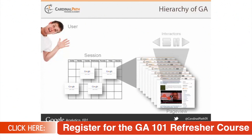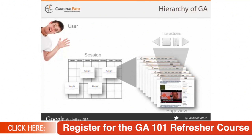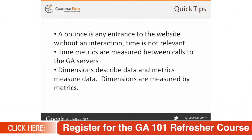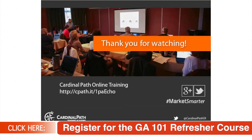Just some quick tips: a bounce is any entrance to the website without an interaction — time is not relevant. A lot of folks feel that if they leave after spending a certain amount of time they're not considered a bounce, but this is not true. It is measured between interactions. Time-based metrics are measured between calls to the GA servers. Dimensions describe data and metrics measure data — dimensions are measured by metrics. Thank you for watching this video. There is a link here to visit the registration page for this course if you're interested in taking it or any other. Be sure to reach out and sign up, and I look forward to seeing everybody in class.